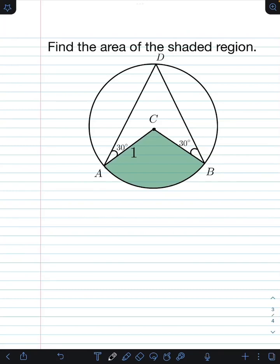Find the area of the shaded region. We have here a circle with center C and with radius of one unit. What we actually need to find here is the area of the sector CAB.